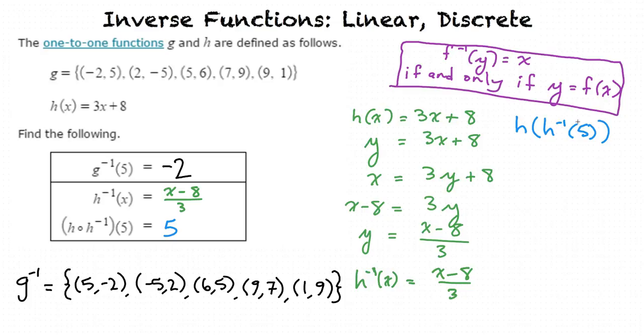So plug in 5 for x in the inverse function. h inverse of 5 equals (5 - 8)/3. 5 minus 8 equals -3. That's divided by 3. And -3/3 simplifies to -1.